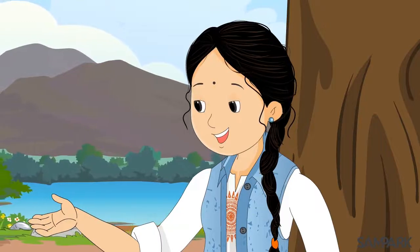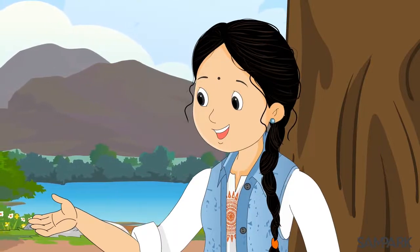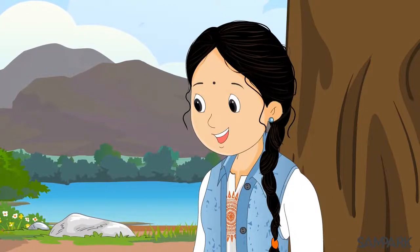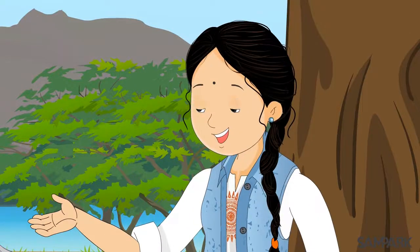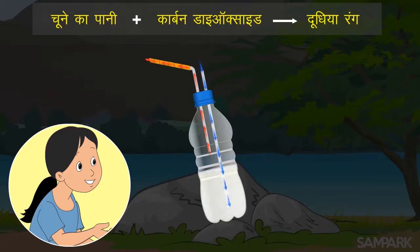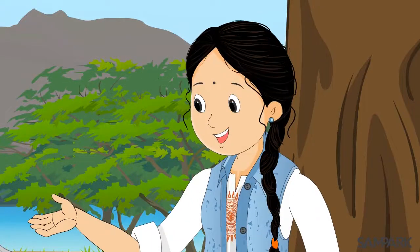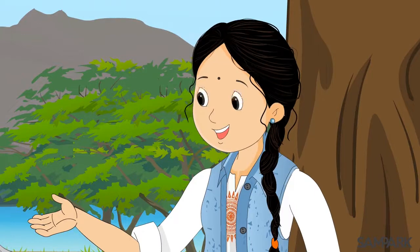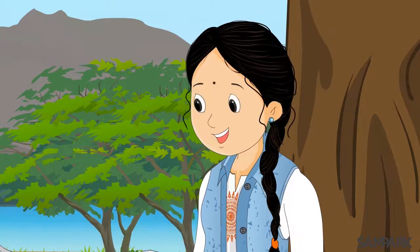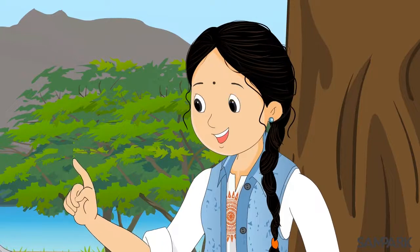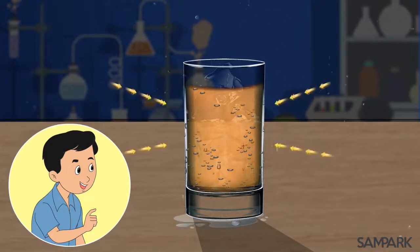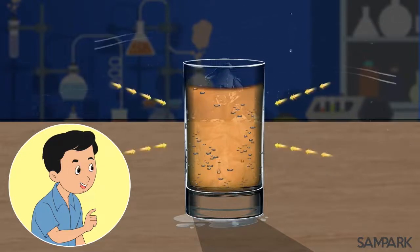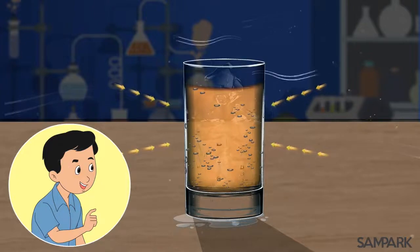अब बताओ कि वायु में कार्बन डायोक्साइड है या नहीं — यह जानने के लिए हमें किस चीज में उसे मिलाकर देखना होगा? चूने के पानी में। चूने के पानी में वायु मिलाने से उसका रंग कैसा हो जाएगा? दूधिया हो जाता है। अच्छा, अब बताओ — मैंने एक गिलास में शर्बत डाला और फिर उसमें बर्फ डाली। बताओ, कैसे गिलास बाहर से पूरा गीला हो गया? शर्बत गिलास से बाहर आ गया क्या? नहीं संपर्क दीदी — हवा में पहले से ही जलवाष्प होती है। गिलास की ठंडी सतह को छूकर जलवाष्प भी ठंडी होकर पानी की बूँदों में बदल गई।